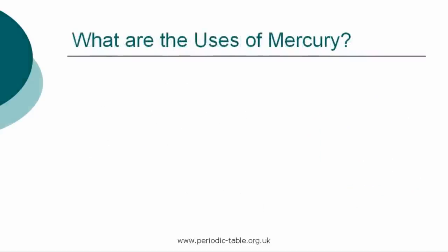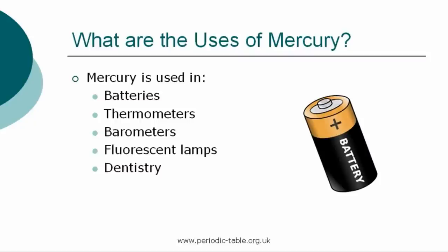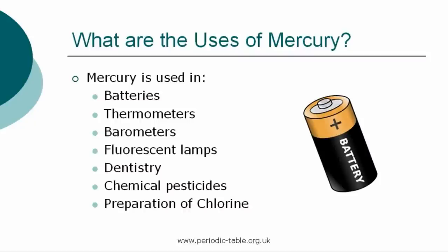Once the properties of an element have been established, we then have the ability to identify how it can be used. Mercury is used in batteries, thermometers, barometers, fluorescent lamps, dentistry, chemical pesticides, and the preparation of chlorine. Working with this substance is very dangerous, and poisoning by mercury and mercury compounds can occur in mercury mines and factories.